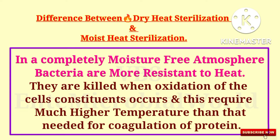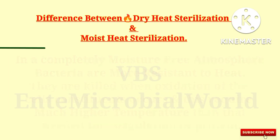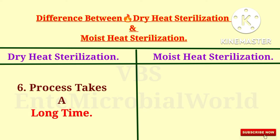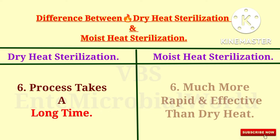In a completely moisture-free atmosphere, bacteria are more resistant to heat. They are killed when oxidation of the cell's constituents occurs, and this requires much higher temperatures than that needed for coagulation of protein. Because of this, dry heat sterilization takes a long time, whereas moist heat sterilization is much more rapid and effective than dry heat.